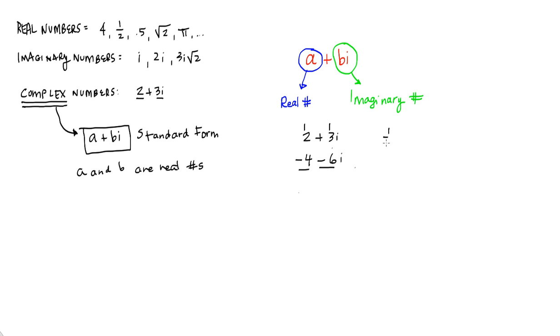How about a half plus 3 quarters i? That's a complex number. It has two real numbers in it: one half, that's our a, and 3 quarters, which is our b. The one half is the real portion of the complex number, and our 3 quarters i is the imaginary portion of our complex number.